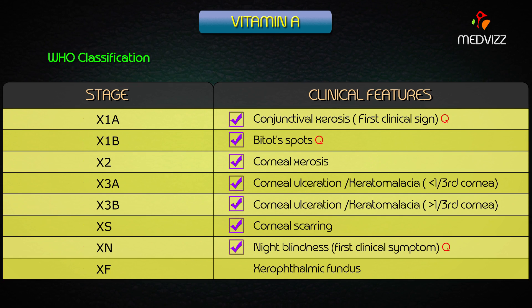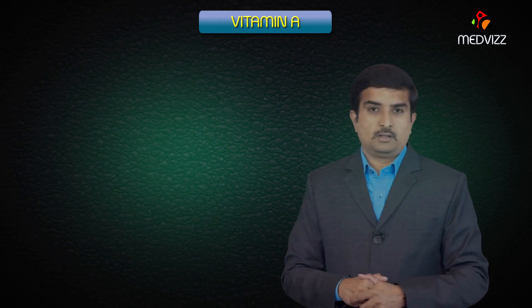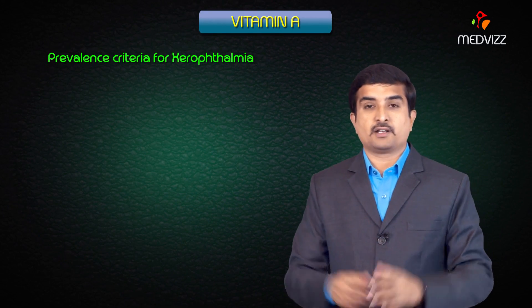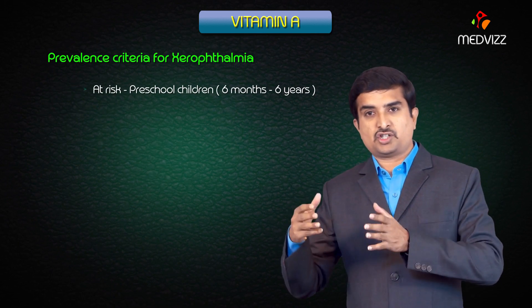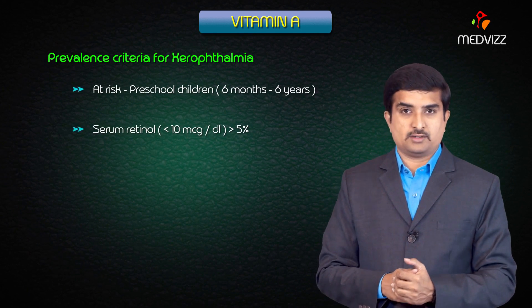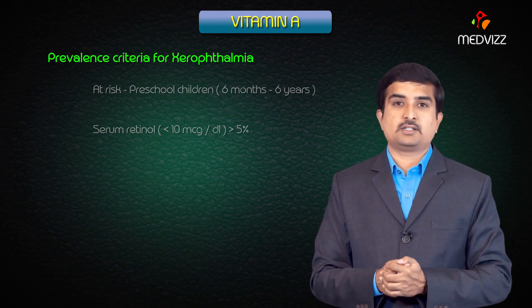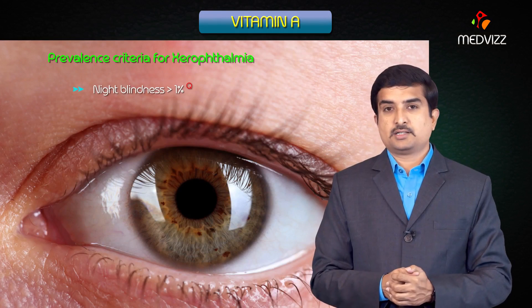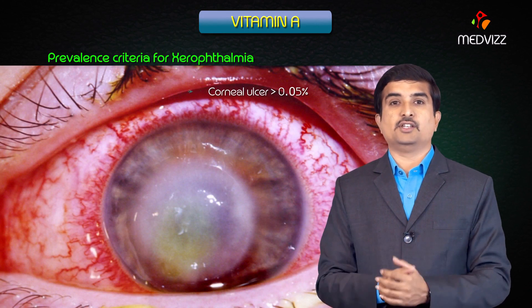XF is the final manifestation, called xerophthalmic fundus, and the patient ultimately develops complete blindness. The prevalence criteria for xerophthalmia in at-risk preschool children (6 months to 6 years): serum retinol concentration less than 10 micrograms per deciliter, night blindness greater than 1%, Bitot's spots greater than 1%, and corneal ulceration greater than 0.05%.